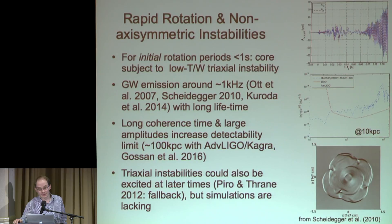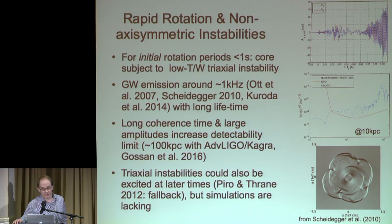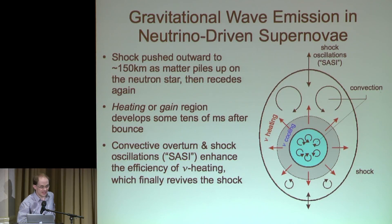A triaxial instability could increase detectability out to close to 100 kiloparsecs, still not reaching Andromeda where the expected rate would go up considerably. There are variations on this theme — we don't know how long such an instability lasts, and it may also arise from different mechanisms like the genuinely relativistic R-mode instability. However, there are not many thorough simulation explorations that tell us with confidence what the signal would really be, what physics we could extract, and how far we could detect it. Generally, the more physics you put in, the less impressive the gravitational wave signal from core collapse supernovae tends to become.